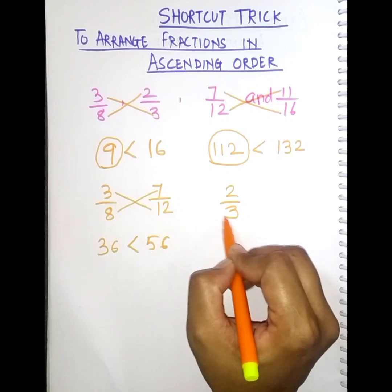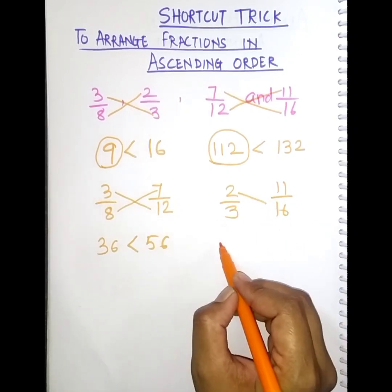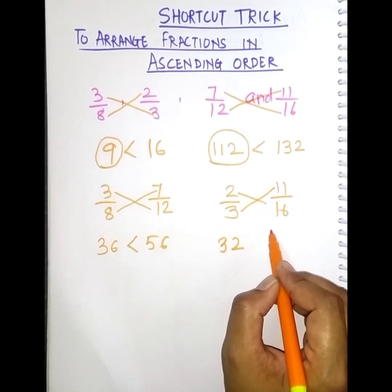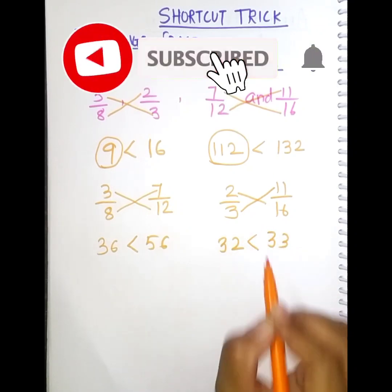So next two numbers are 2 by 3 and 11 by 16. So 2 into 16 is 32 and 11 into 3 is 33. So 32 is smaller.